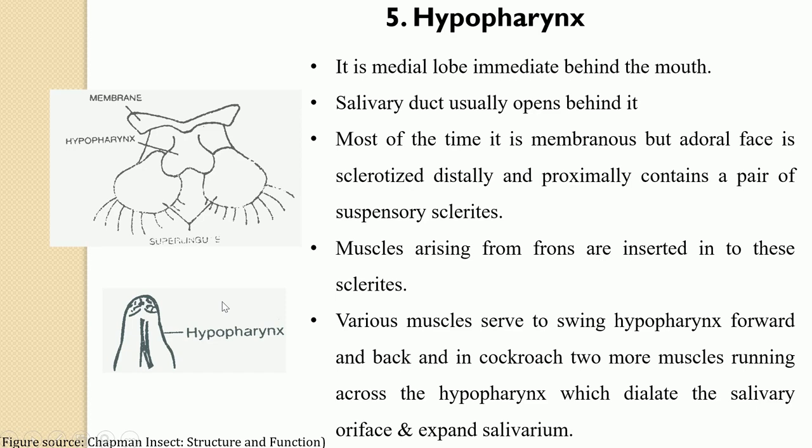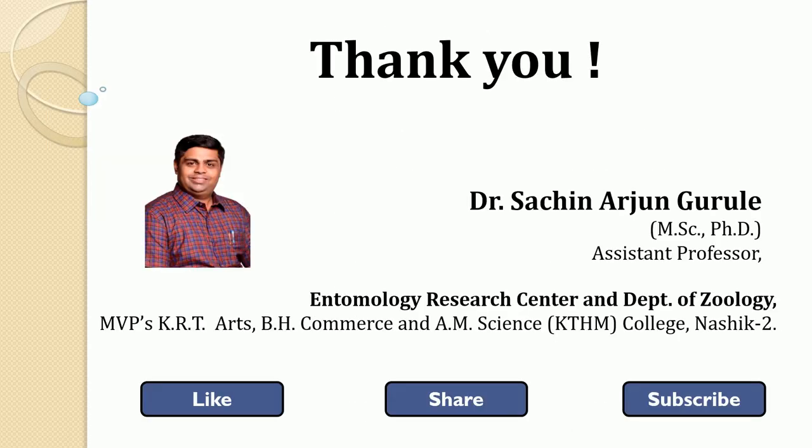In apterygotes, larval Ephemeroptera, and Dermaptera, the two lateral lobes of the hypopharynx — the superlingui — are separated, while in pterygote insects the superlingui are fused with the median lingua to form a single composite hypopharynx. So this concludes our discussion of the appendages of the mandibulate mouth part — the labrum, pair of mandibles, pair of maxillae, labium, and hypopharynx. Thank you very much.